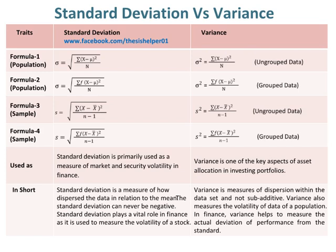In short, standard deviation is a measure of how dispersed the data is in relation to the mean. The standard deviation can never be negative. Standard deviation plays a vital role in finance as it is used to measure the volatility of a stock. Whereas variance measures dispersion within the data set and is not sub-additive. Variance also measures the volatility of data of a population.